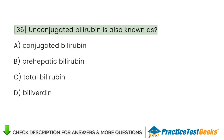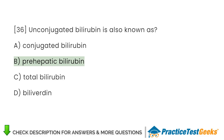Unconjugated bilirubin is also known as: A. Conjugated bilirubin. B. Prehepatic bilirubin. C. Total bilirubin. D. Biliverdin.